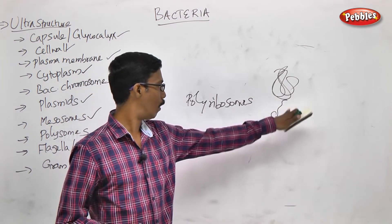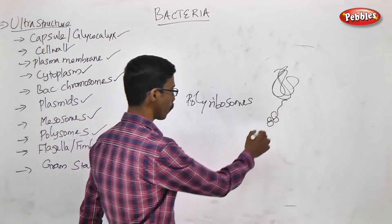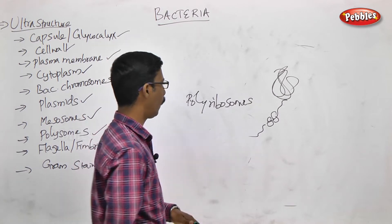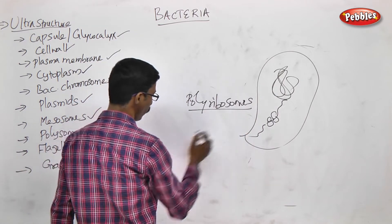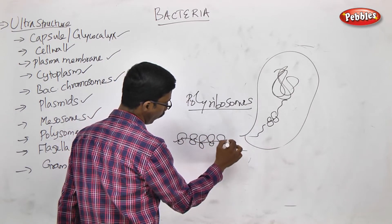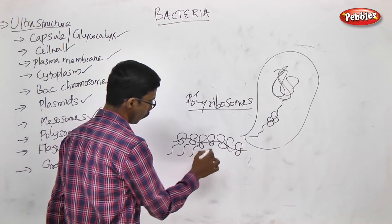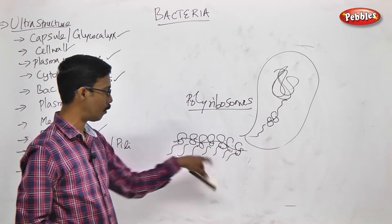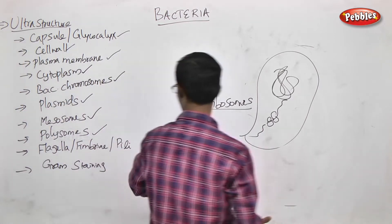Simultaneously — transcription, RNA synthesis — the ribosome can come and bind, and simultaneously produce a protein molecule. Translation can be done at the same time. This is the advantage. Polyribosomes: one mRNA will bind multiple ribosomes. It is called polyribosomes. One ribosome can produce a single polypeptide; simultaneously, one mRNA will produce multiple protein copies. This structure is called polyribosomes.